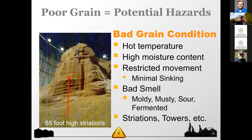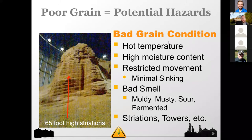Another important issue is bad grain quality, which impacts flowing grain, avalanche, and bridging. As a producer, worker, or manager, you need to know the telltale signs of bad grain: pockets of hot temperature, high moisture, restricted movement when you're walking through it, if it smells moldy, musty, or fermented, or if you actually see columns forming. If you see these signs, you're dealing with bad grain and it's really important to follow the right procedures to clean it out safely.